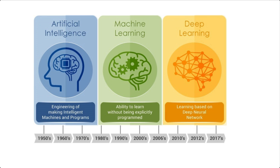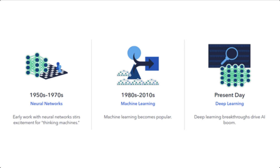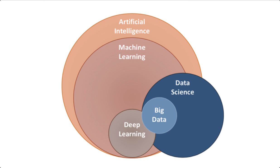A better way to understand this is: AI is constructed on a set of algorithms that try to imitate human intelligence. Machine learning is one of these algorithms, and deep learning is a sub-scale of machine learning techniques. Machine learning consumes data and uses statistics to better learn from the data, in turn improving the ability to solve tasks.